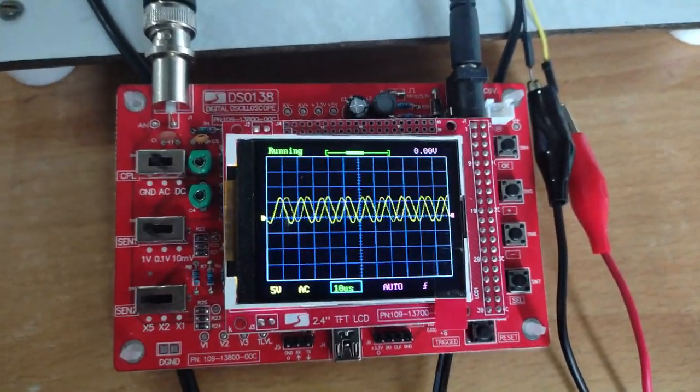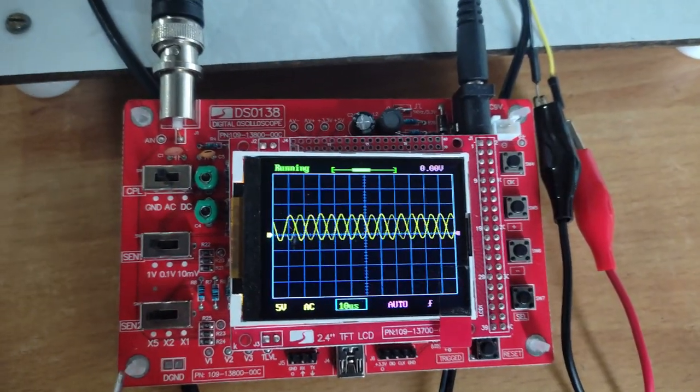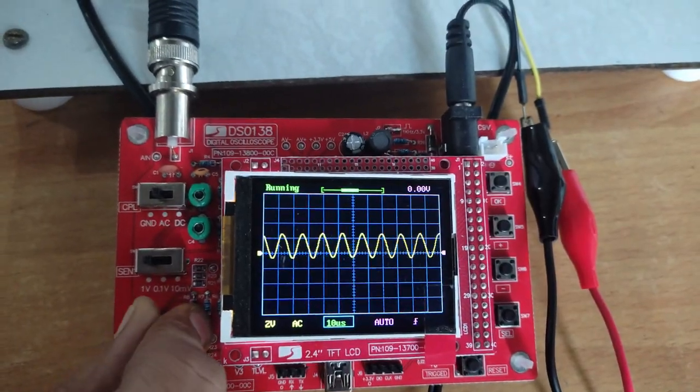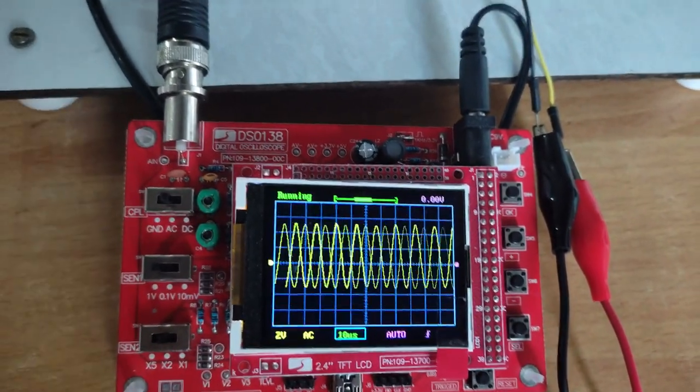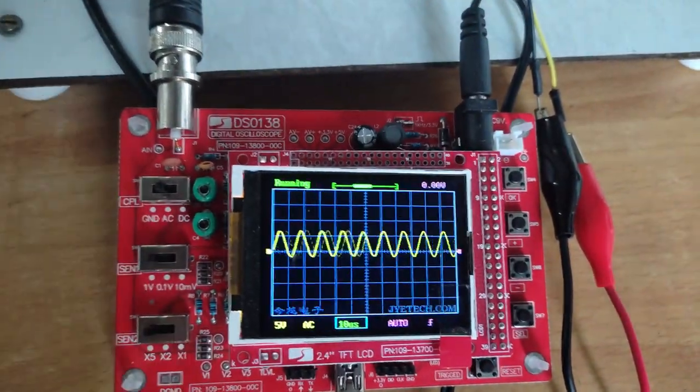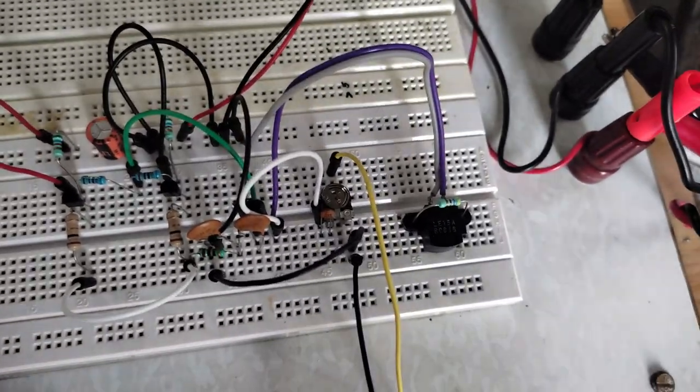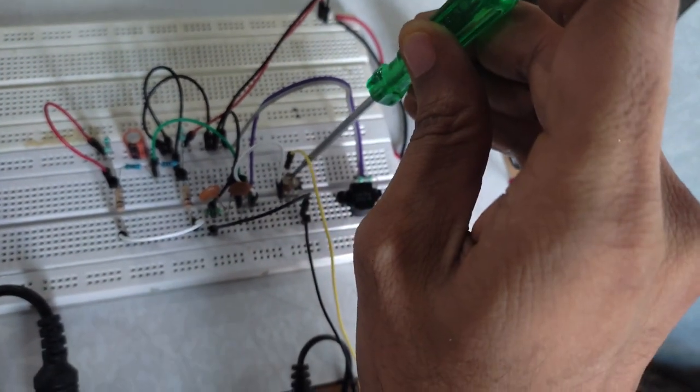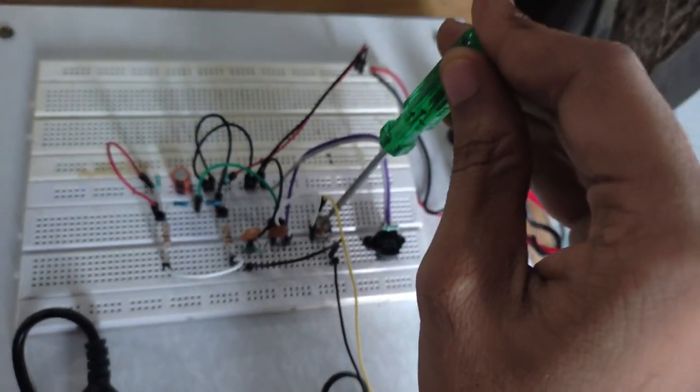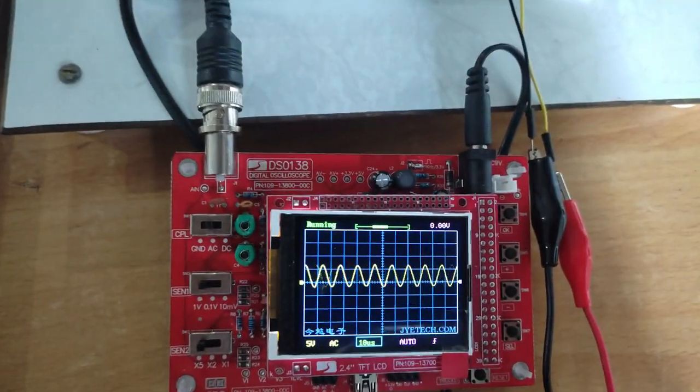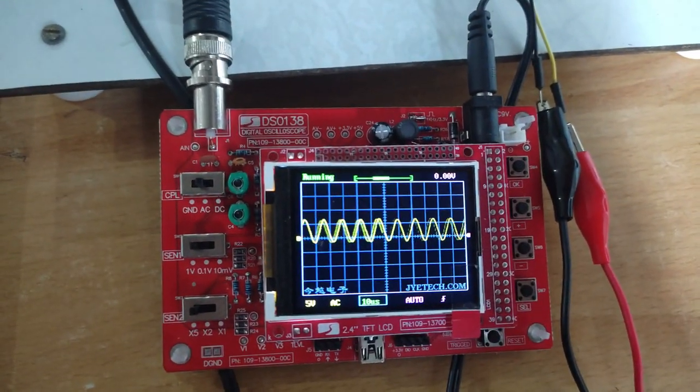We can increase the amplitude of the signal by changing the position of the sensitivity switch to X2. We can also adjust the amplitude by this potentiometer. So for this, take a screwdriver like this and rotate this potentiometer, and see the effect on the screen of DSO138.